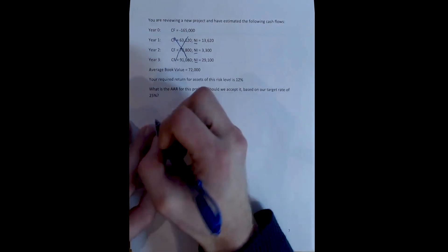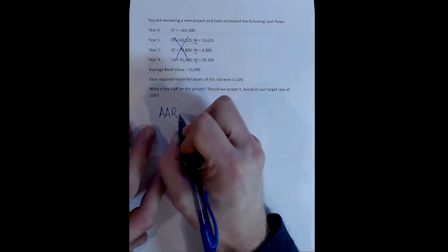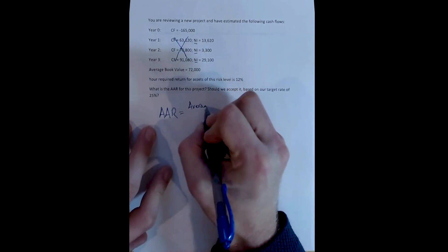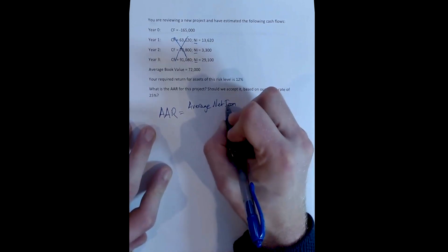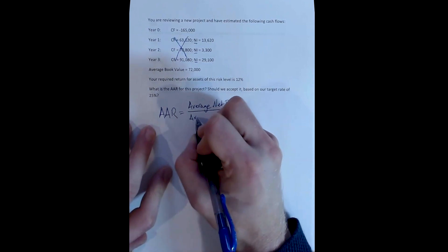Now, the Average Accounting Return is a ratio, and the ratio is the average net income for the projects divided by the average book value of the project's assets.